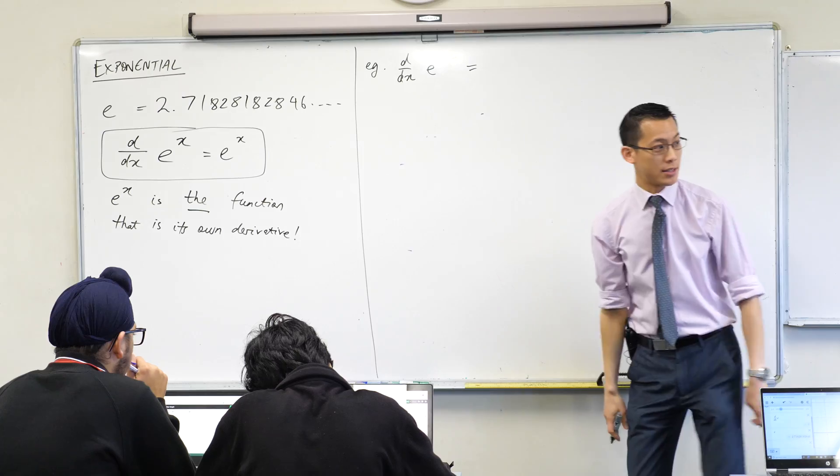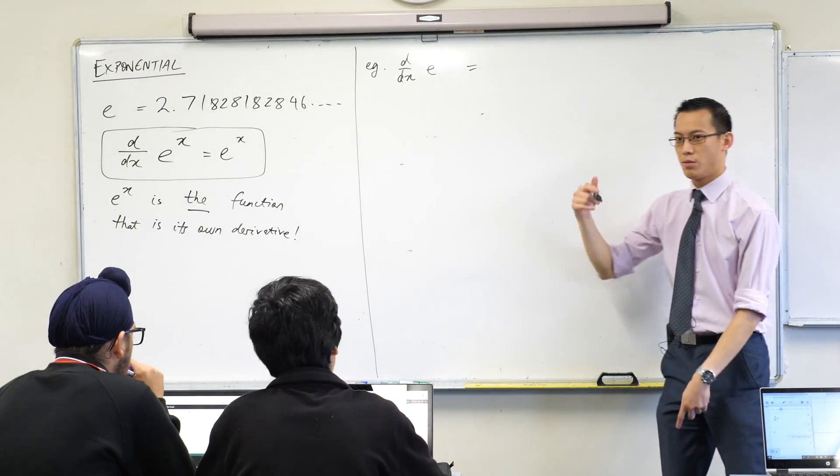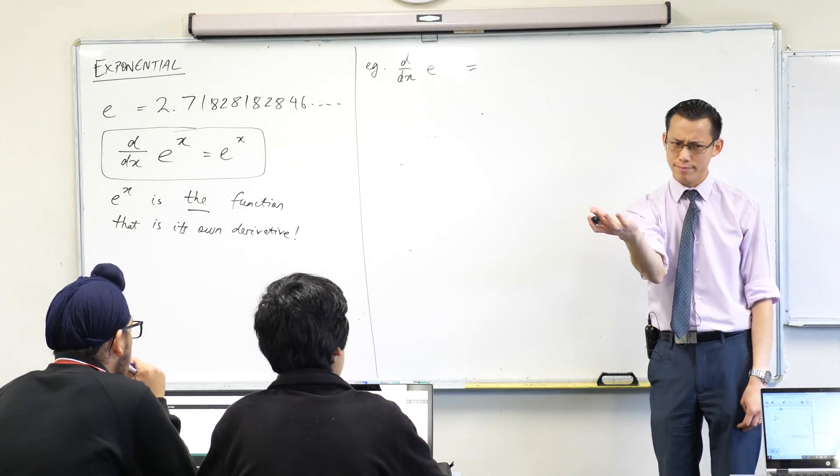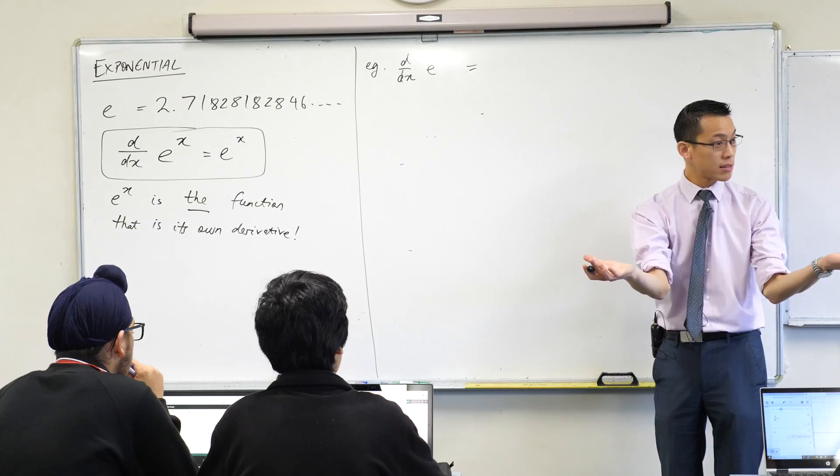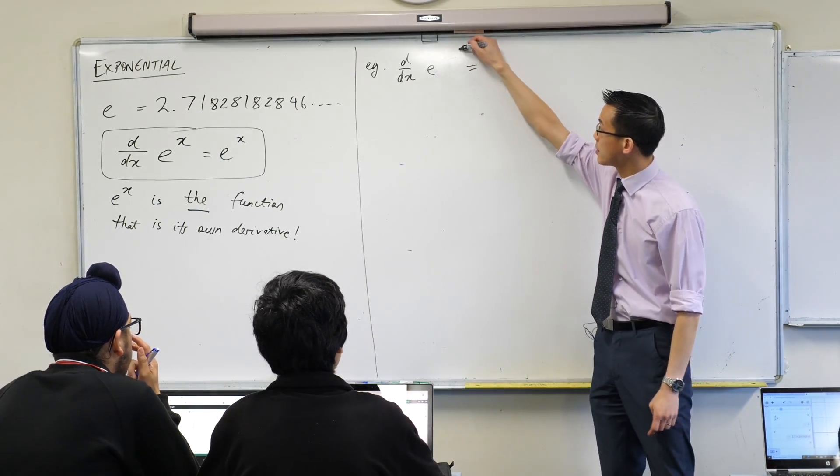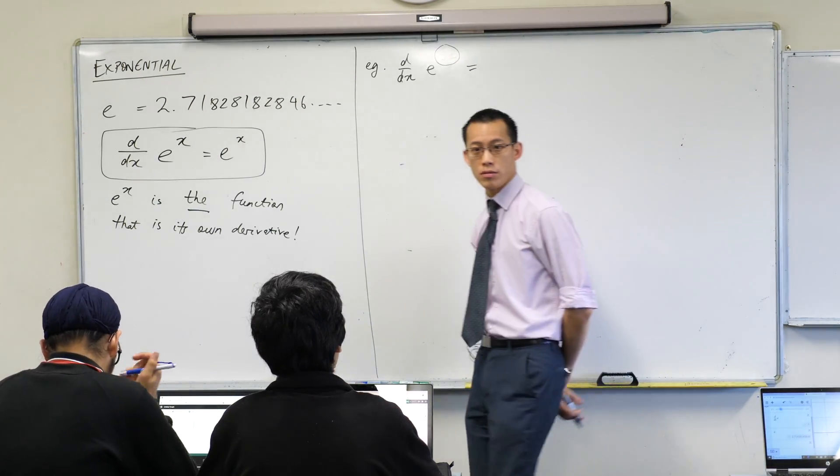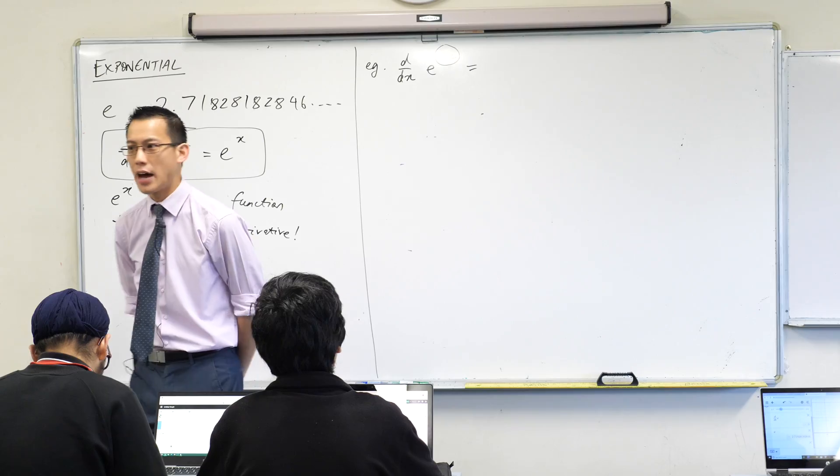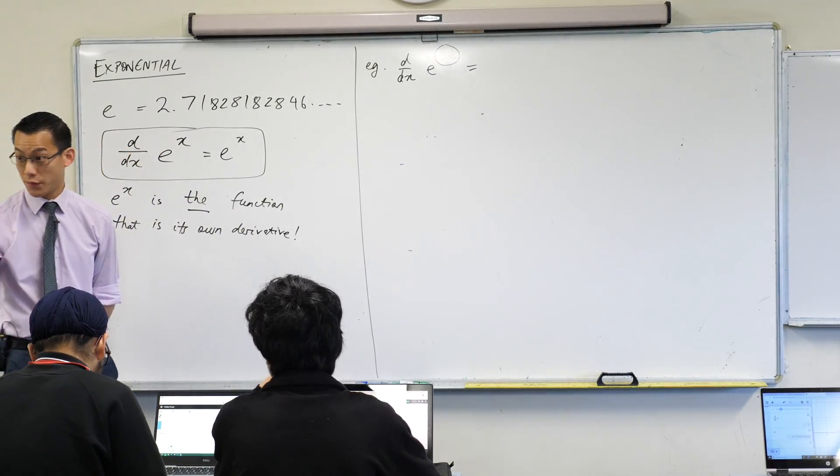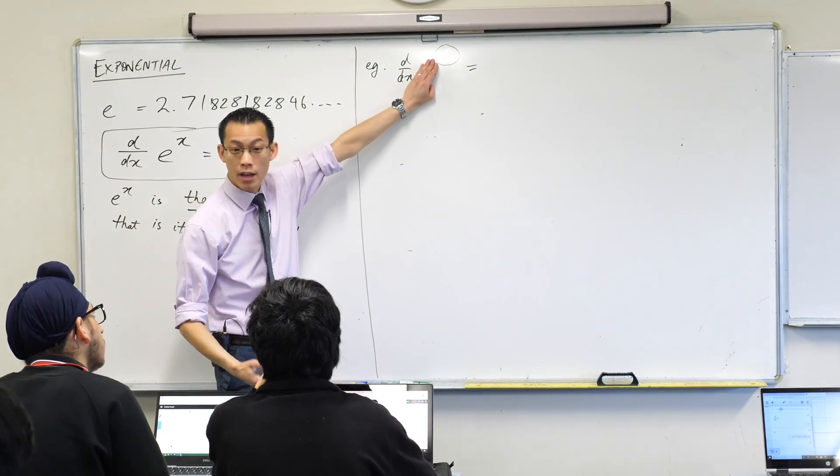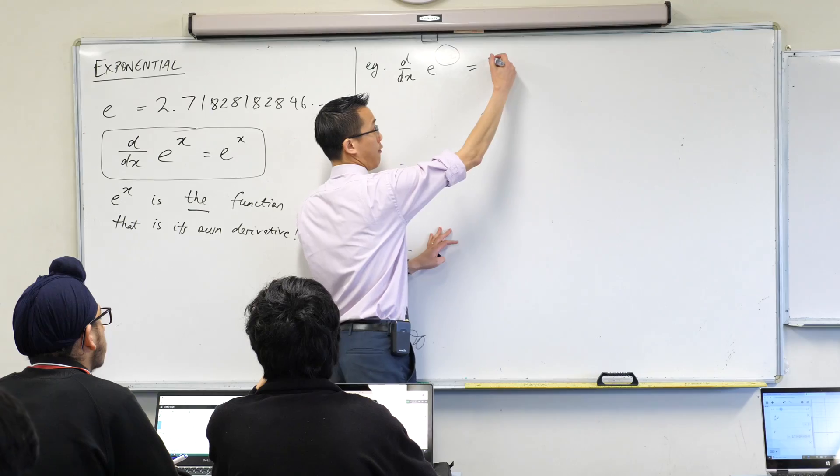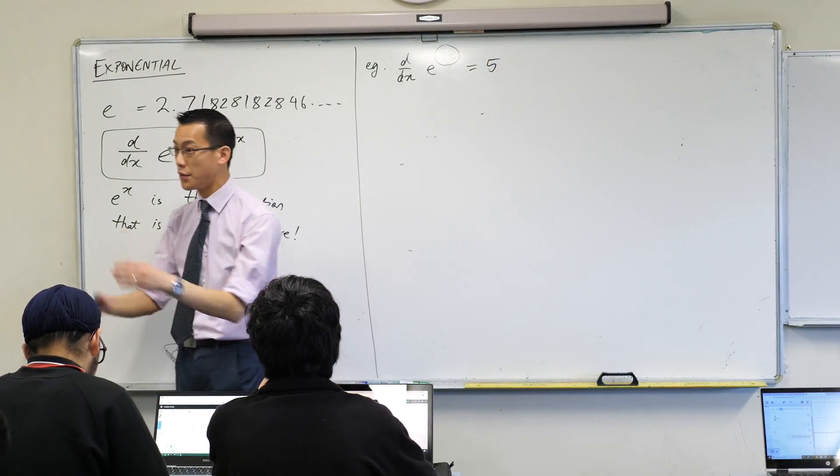So when we differentiate this, what we need to say is, what's the derivative of the inside function and what's the derivative of the outside function? There's my inside function, right there. What's the derivative of that thing? Just 5x. What's its derivative? It's just 5, isn't it? Just forget about this for a second. You know how to differentiate that. It's just a 5. There's the derivative of the inside.